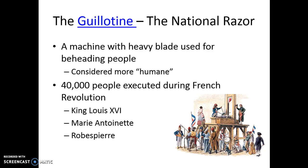Around the same time, we see the invention of the guillotine, which was nicknamed the National Razor. This machine with a heavy blade was used for beheading people and was considered a more humane form of execution than chopping someone's head off with an axe. Because of this invention, 40,000 people were executed during the French Revolution, including King Louis XVI, Marie Antoinette, and one of the leaders of the revolution, Robespierre.